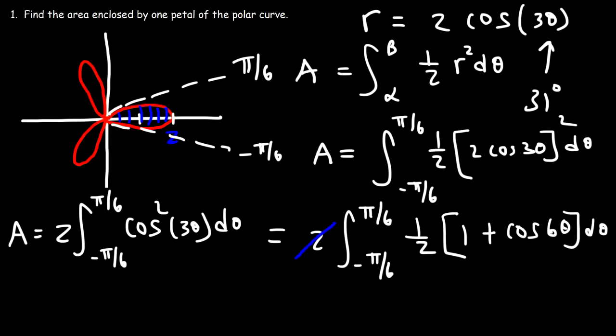So all we need to do is integrate cosine 2 theta d theta. The antiderivative of cosine 2 theta is sine 2 theta divided by 2, evaluated from negative pi over 4 to pi over 4. We can cancel the 2s. So this is going to be sine (2 times pi over 4) minus sine (2 times negative pi over 4), which is sine(pi over 2) minus sine(negative pi over 2). Sine(pi over 2) is 1, and sine(negative pi over 2) is negative 1. So 1 minus (negative 1) is 2. That's the answer, but keep in mind this is just for one loop.